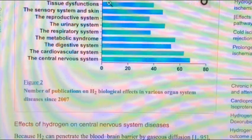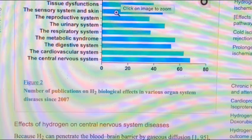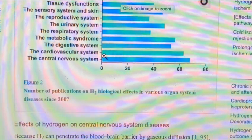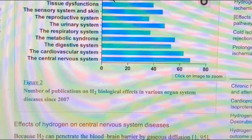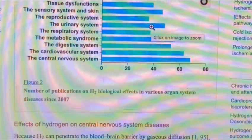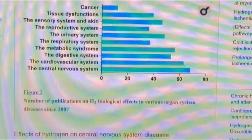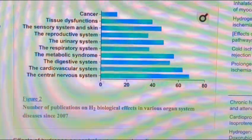These are studies from 07 on cancer tissue dysfunction, the sensory system and skin, the digestive system, respiratory system, the central nervous system. I mean there's so many different and there's so much more now than there was back then. You can see the whole thing right here, you can see the cancer right there. And so there's definitely been a lot of science.